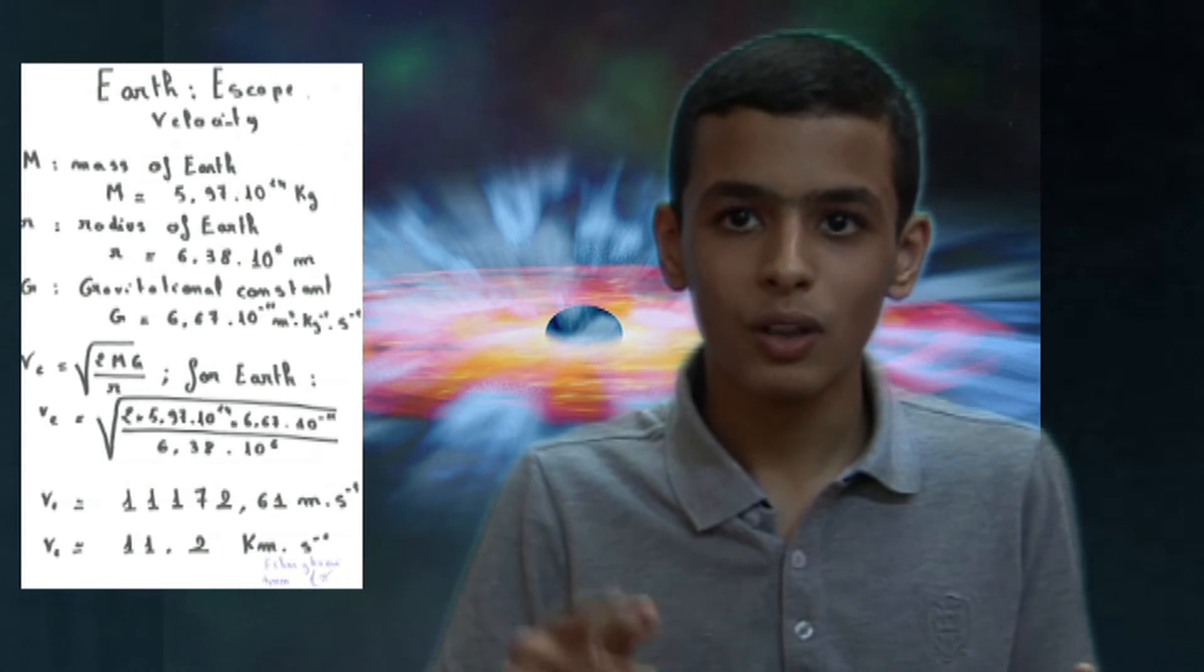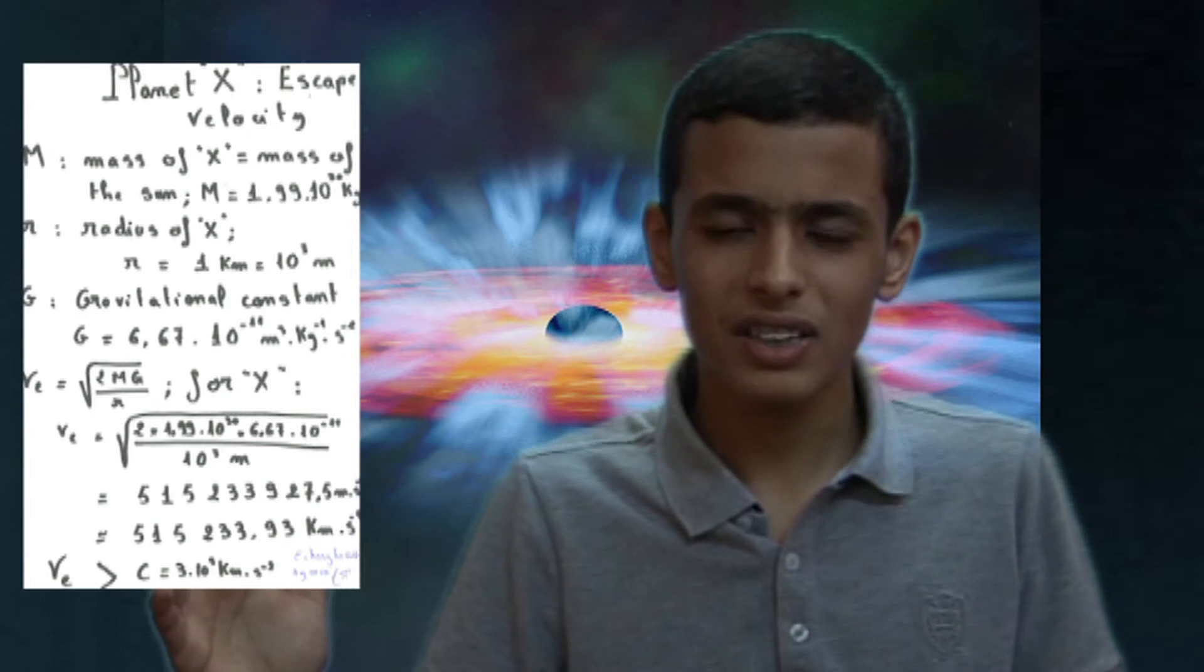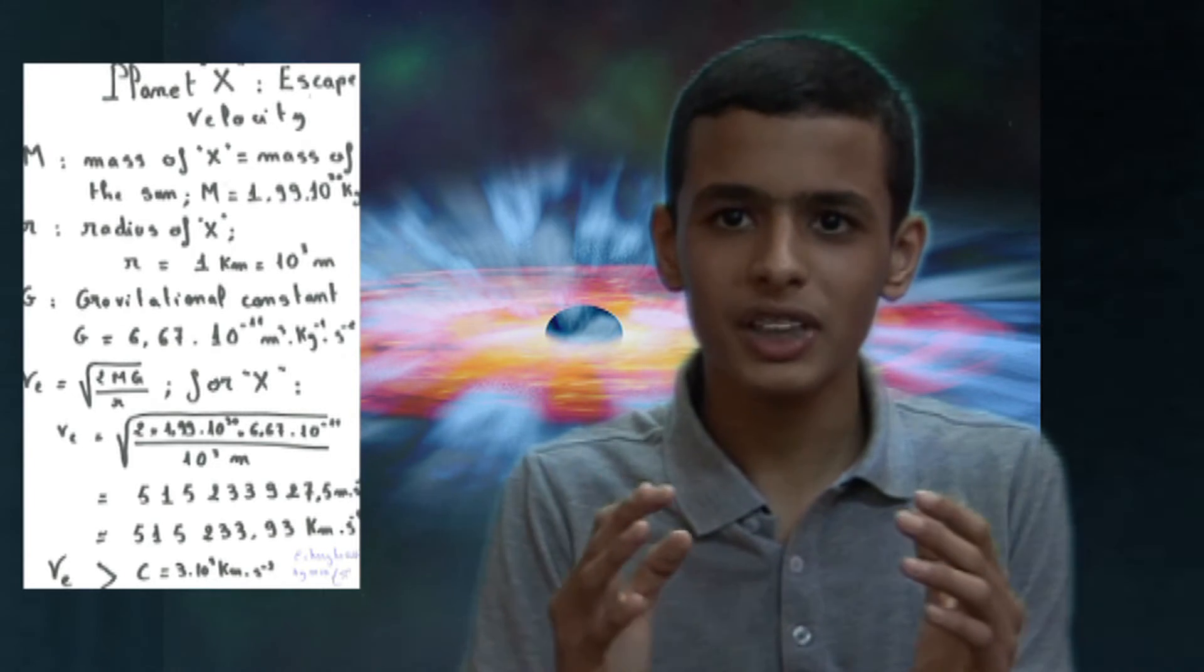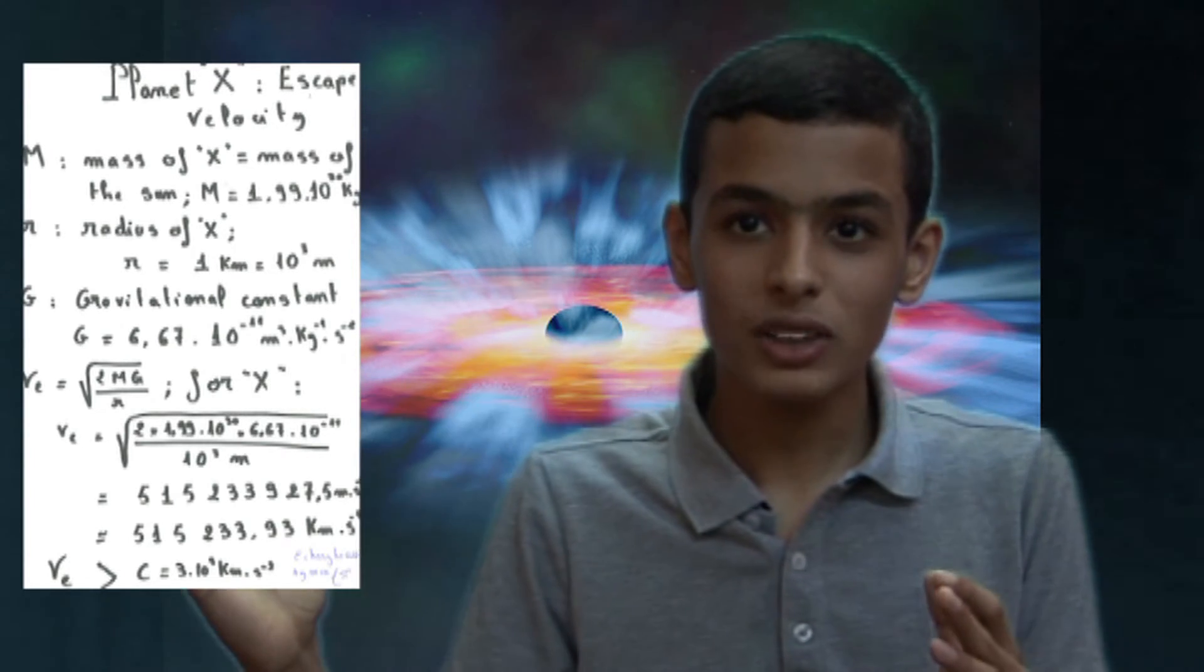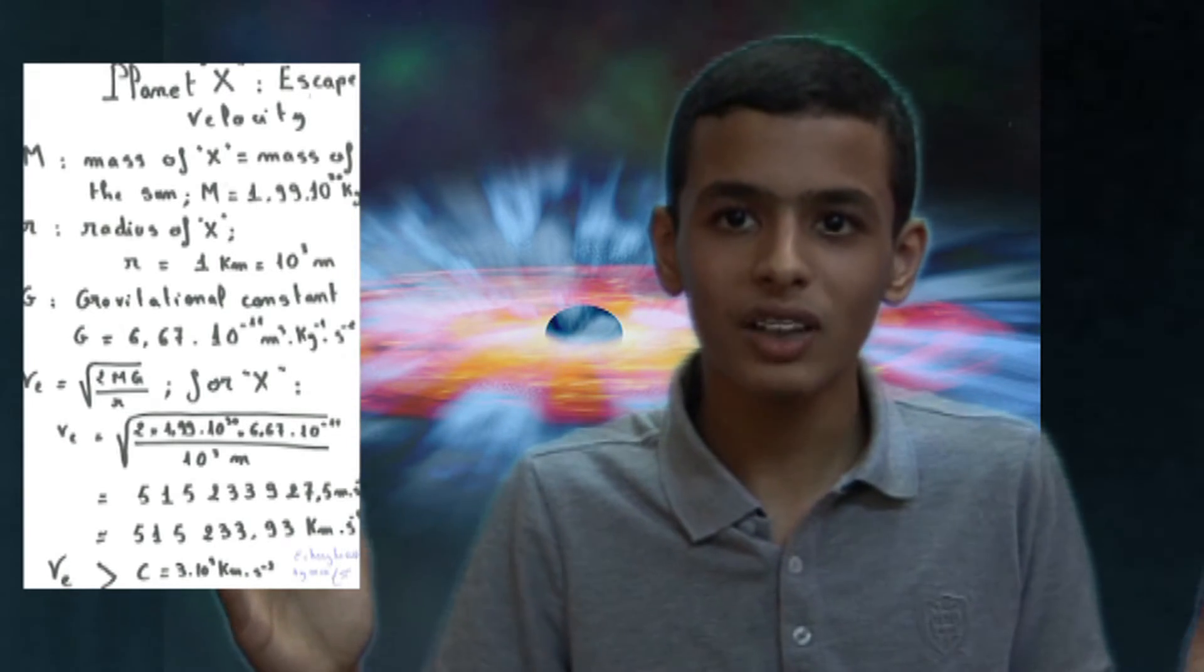For Earth, it is equal to 11.2 km per second. Now, suppose there is a hypothetical planet as massive as the Sun, but with a mean radius equal to 1 km. The escape velocity is then 515,000 km per second, which is much greater than the speed of light.